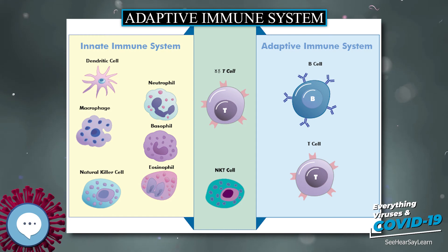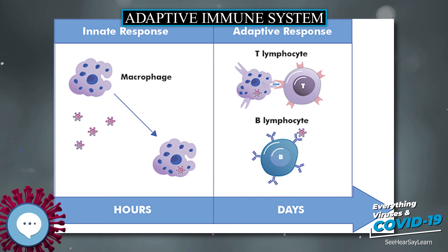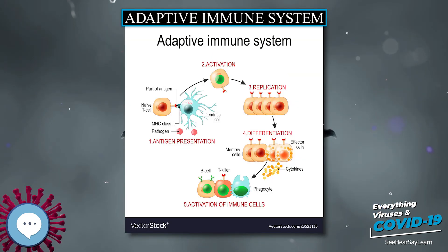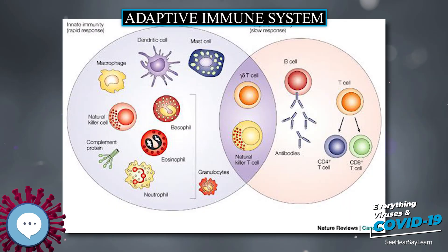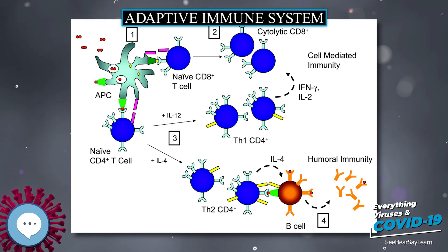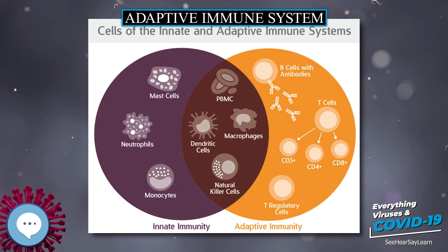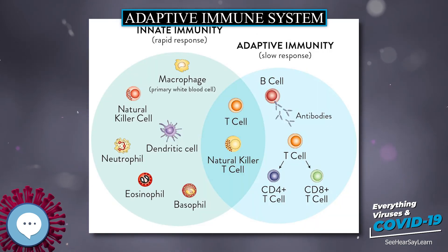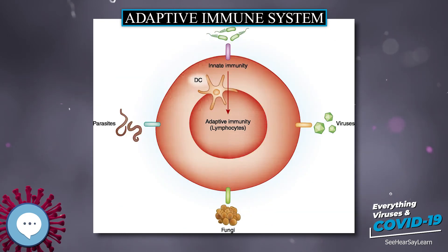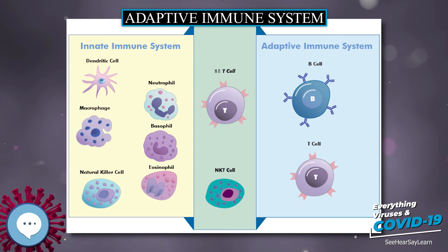Immunization, commonly referred to as vaccination, is the deliberate induction of an immune response, and represents the single most effective manipulation of the immune system that scientists have developed. Immunizations are successful because they utilize the immune system's natural specificity as well as its inducibility. The principle behind immunization is to introduce an antigen derived from a disease-causing organism that stimulates the immune system to develop protective immunity against that organism, but does not itself cause the pathogenic effects of that organism. Most viral vaccines are based on live-attenuated viruses, whereas many bacterial vaccines are based on acellular components of microorganisms, including harmless toxin components. Many acellular vaccine antigens do not strongly induce an adaptive response and require the addition of adjuvants that activate the antigen-presenting cells of the innate immune system to enhance immunogenicity.